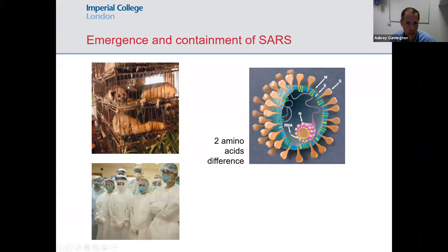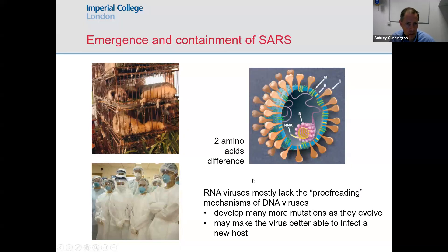Civet cats were implicated in the spread of SARS virus. Viruses found in these civet cats differed from those in humans by just two amino acids. Coronaviruses are RNA viruses that have the ability to mutate quite easily because they lack proofreading mechanisms seen in DNA viruses. They develop a lot of mutations as they evolve, which may result in the ability to better infect a new host and jump between species.